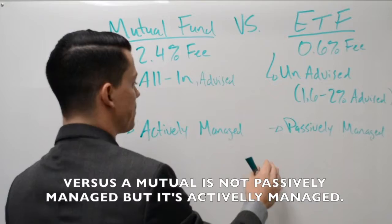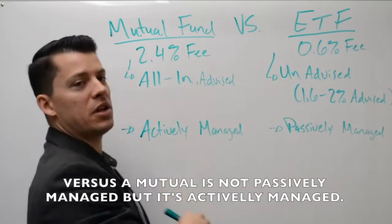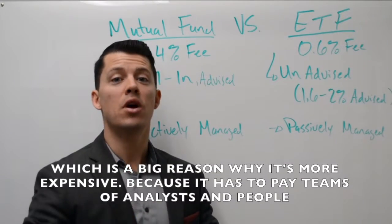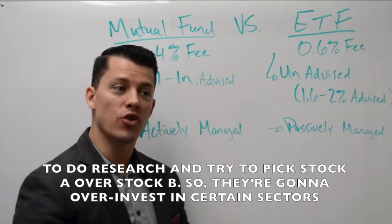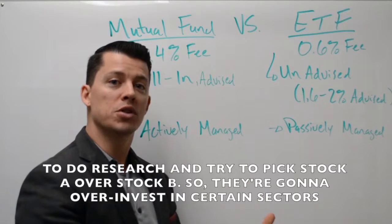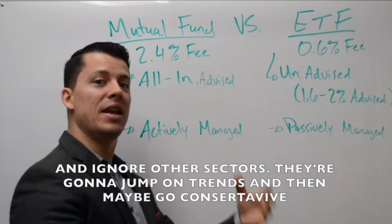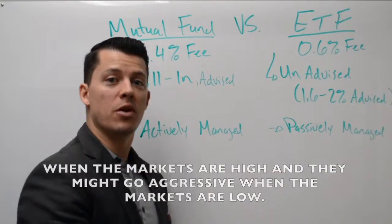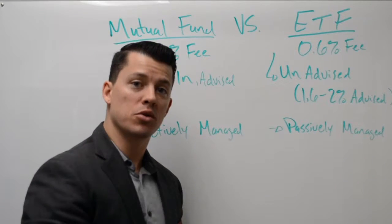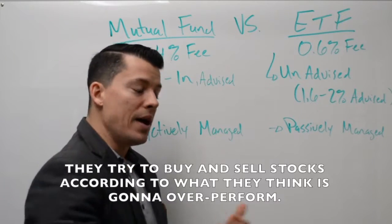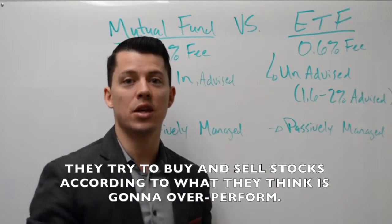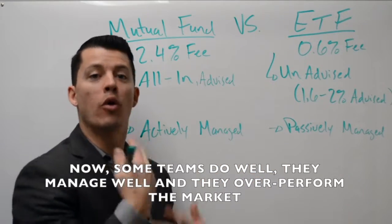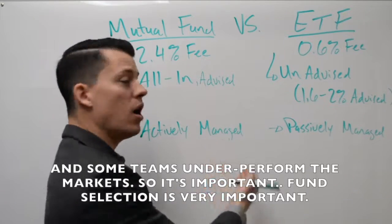A mutual fund is not passively managed but actively managed, which is a big reason why it's more expensive — it has to pay teams of analysts and people to do research and try to pick stock A over stock B. They'll over-invest in certain sectors and ignore others, jump on trends, go conservative when markets are high, and go aggressive when markets are low. Some teams over-perform the markets, and some underperform.